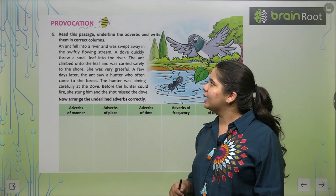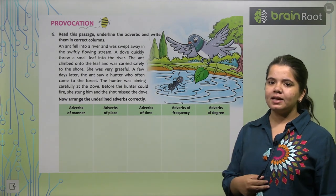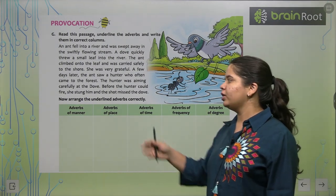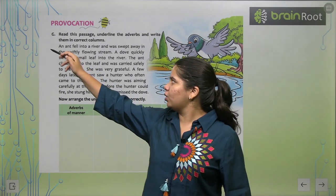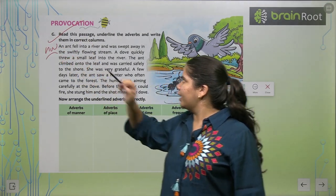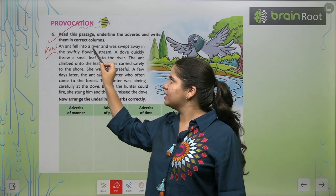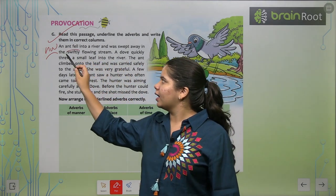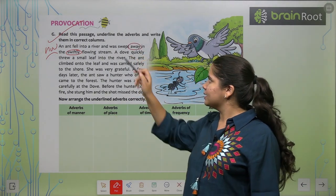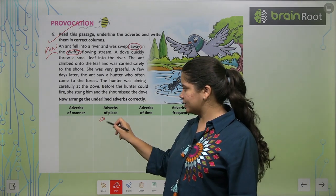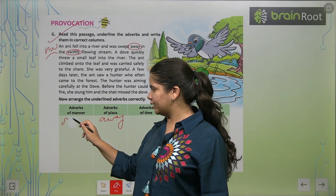Read out the passage, underline the adverbs and write them in correct columns. So you have to look at these columns. You have to look at this passage. You have to look for words and adverbs and write in the types of columns. So I guess this can be done by you. So this exercise I am giving you as your homework to do yourself. I am going to give you an example. As you can see in the first line, the ant fell into the river and was swept away in the swiftly flowing river. Away will be placed. So I am going to give you away. And here you have to write swiftly. So this way you will fill on.